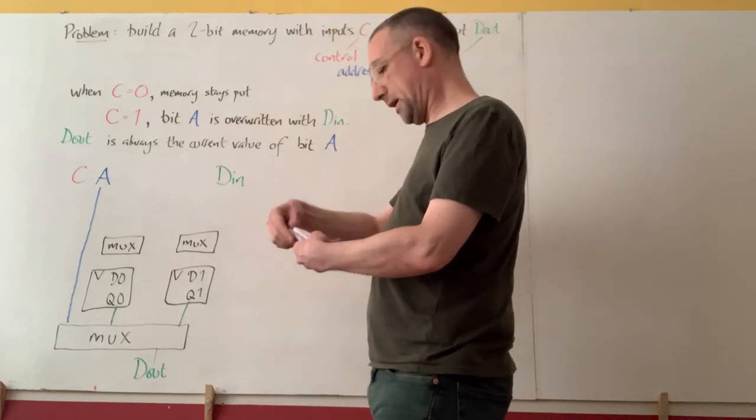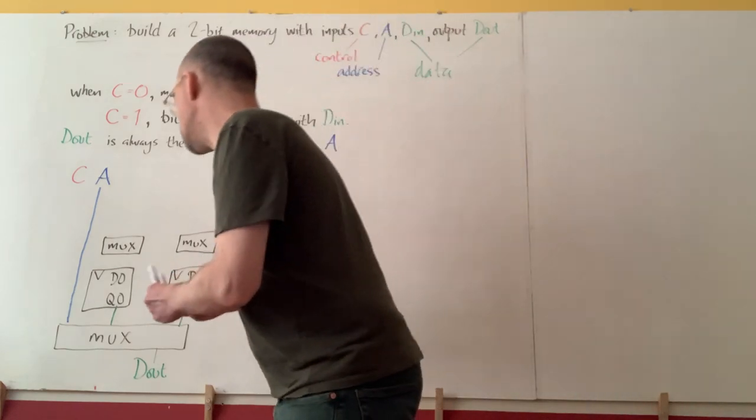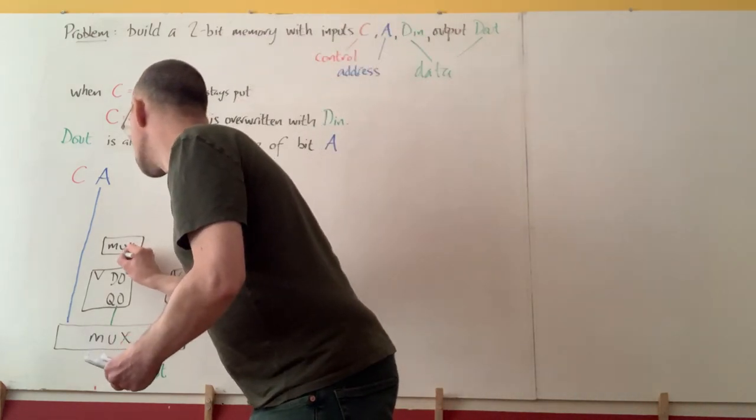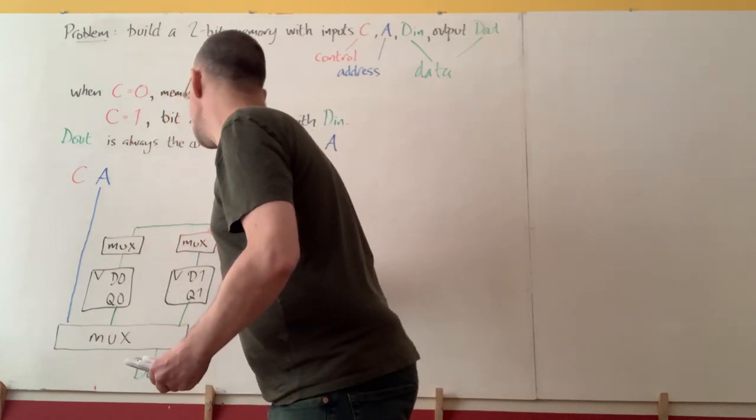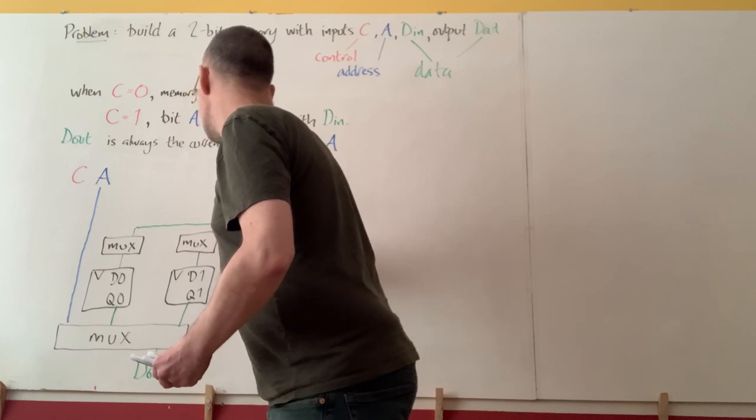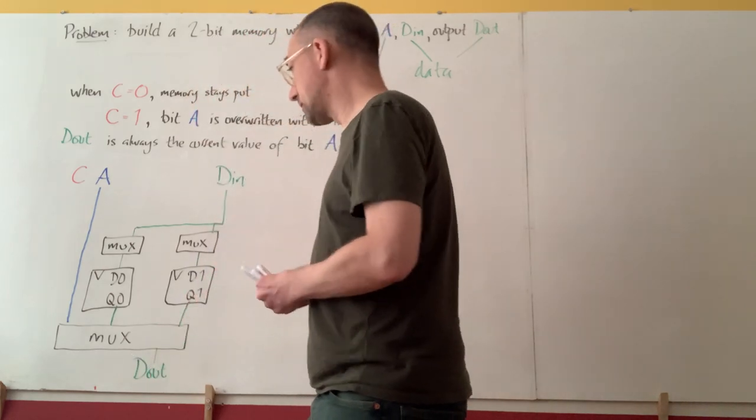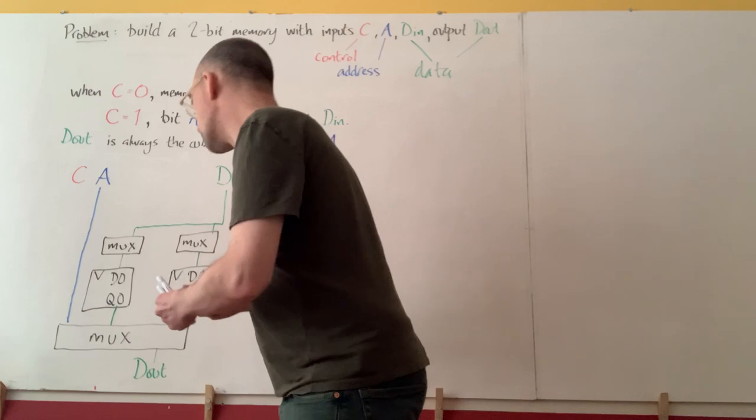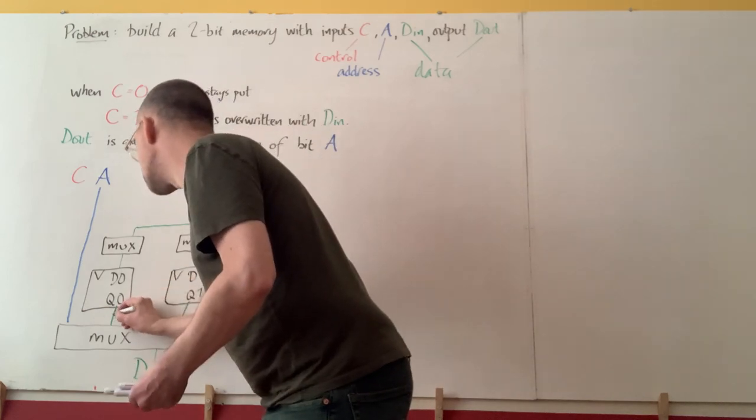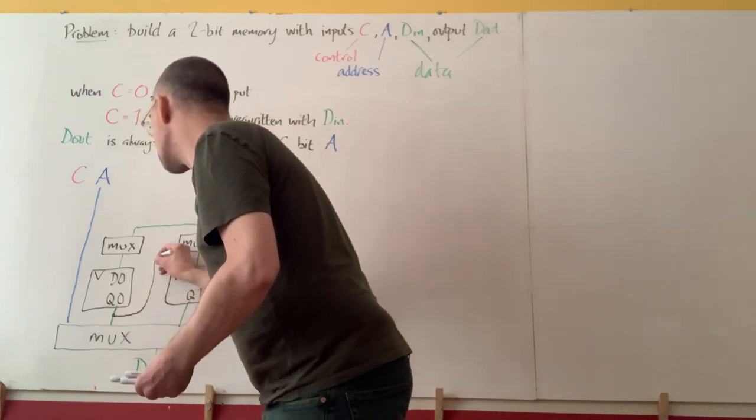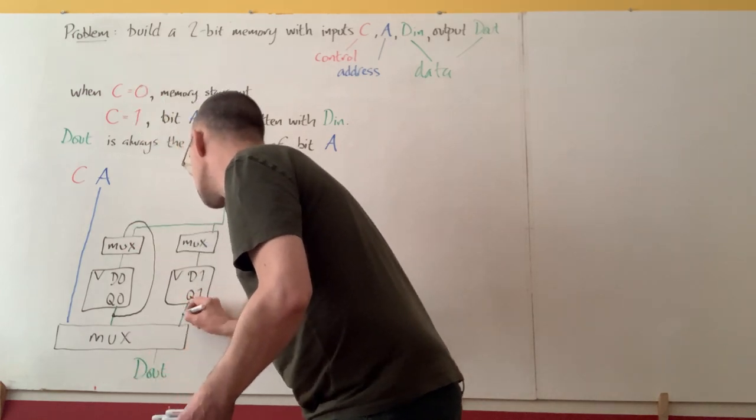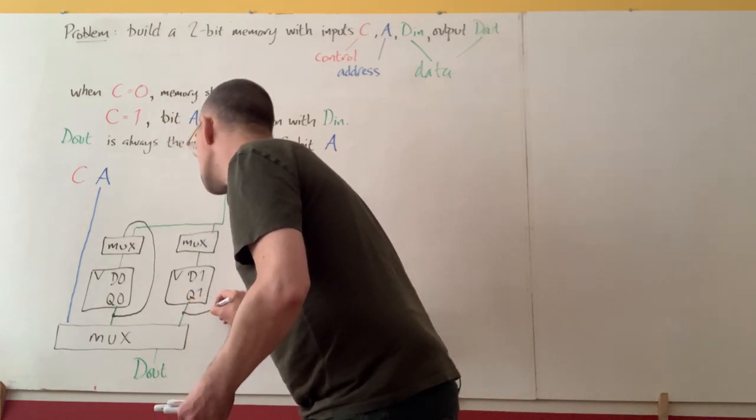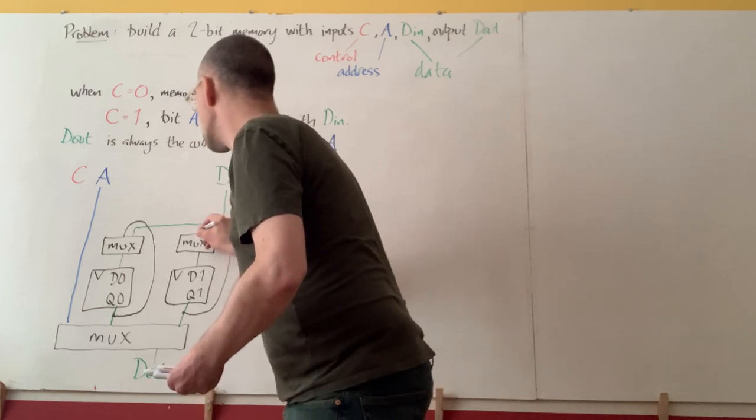Okay, so each D is chosen by a mux. And it could be given by D_in, or it could be given by the old value of the memory.